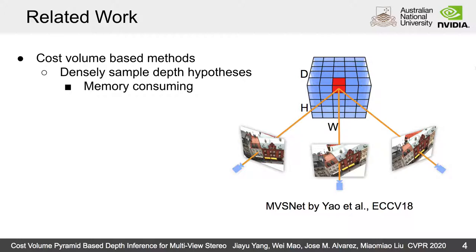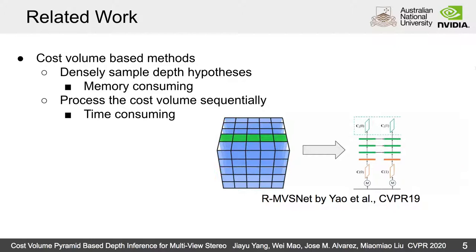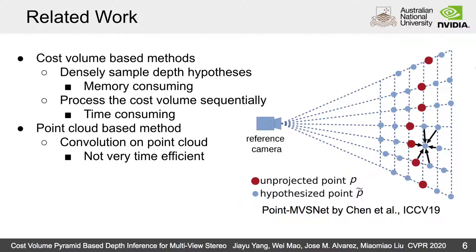Another method tried to address this problem by sequentially processing the cost volume using recurrent networks. It reduced memory usage but consumes much more time. Alternatively, Chen and co-authors try to first estimate a coarse depth map and then perform edge convolution directly on point cloud to refine the depth map. Despite its good performance, convolution on point cloud is not very time-efficient as well.